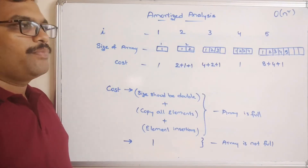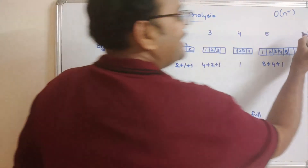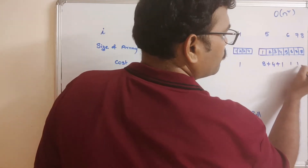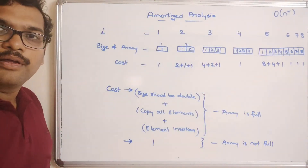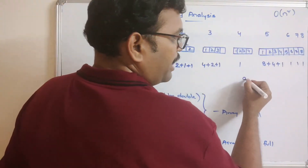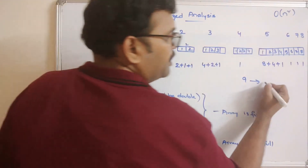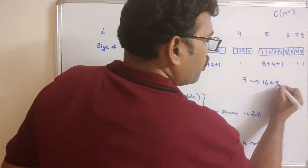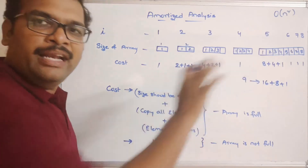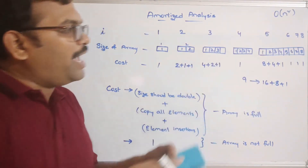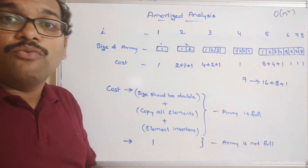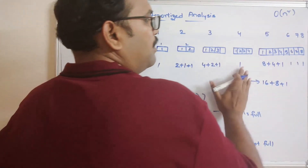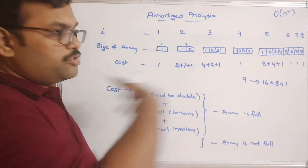Continuing the trace: for elements 5 through 8, you can observe the array is not full, so the cost for each of 6, 7, and 8 will be 1. If it is again the 9th element, the array is full, so the cost will be: double the size to 16, plus copy all 8 elements, plus 1 for insertion. Like this we have to analyze each and every step and then average the cost of all the operations.